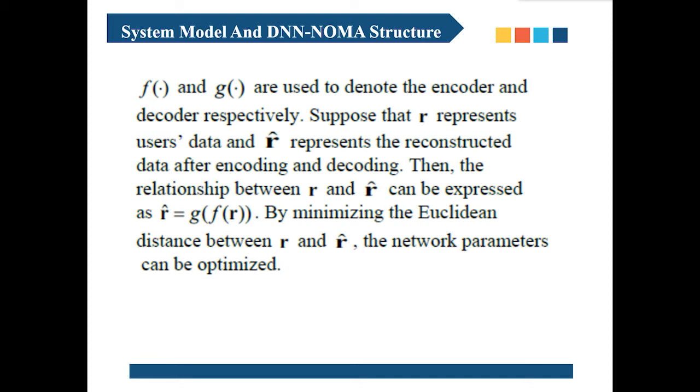F and G are used to denote the encoder and decoder respectively. Suppose that R represents user's data and R̂ represents the reconstructed data after encoding and decoding. By minimizing the Euclidean distance between them, the network parameters can be optimized.